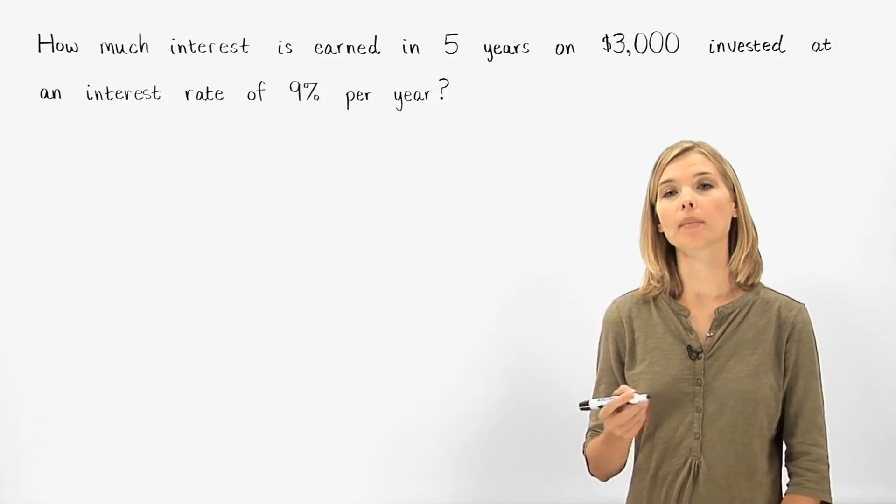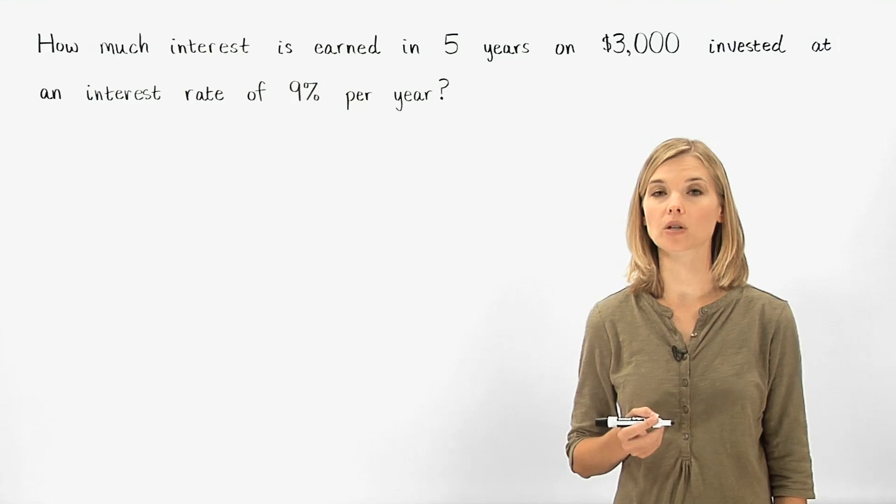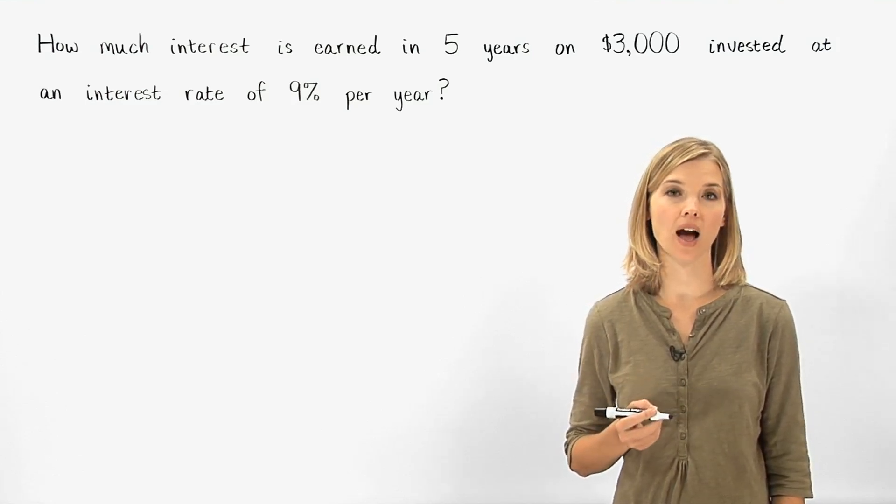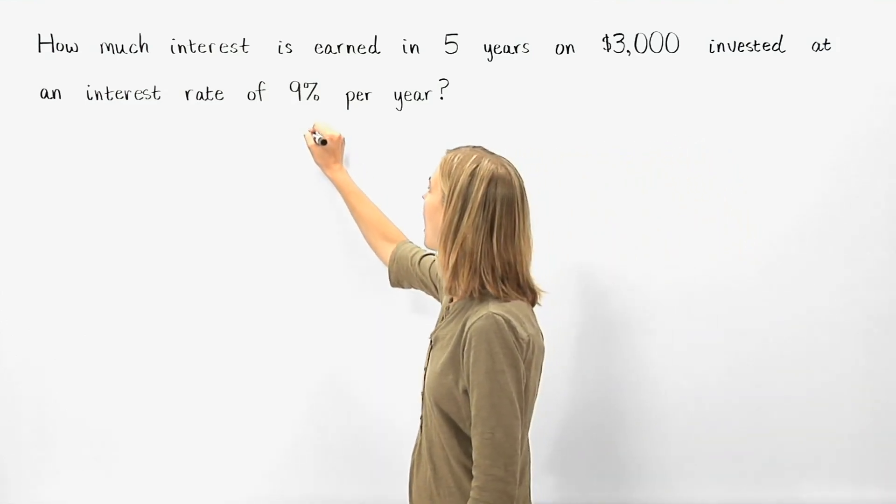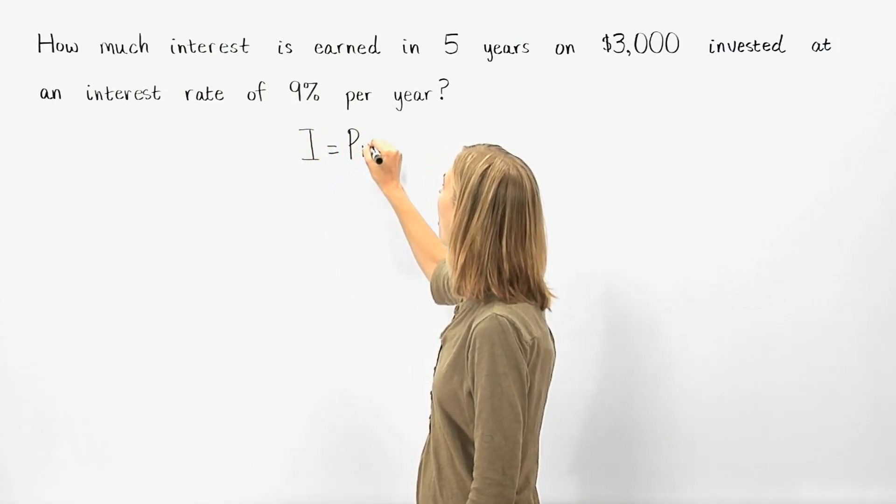To find out how much interest is earned, we use the interest formula. Interest equals principal times rate times time, or I equals PRT.